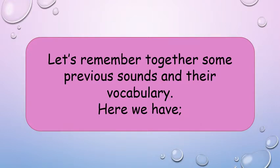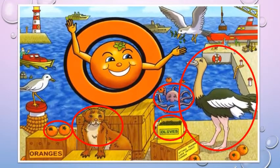Let's remember together some of our previous sounds and their vocabularies. Oscar Orange — what does he say? He says O! Can you see three animals that begin with the sound O? Yes! There is ostrich, octopus, otter, and there are two things that we can eat — oranges and olives!